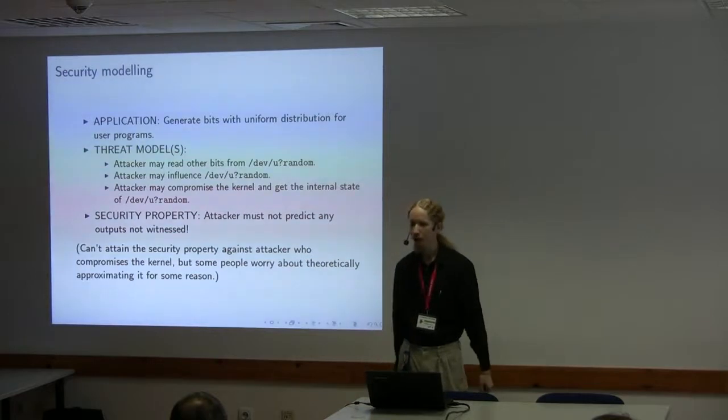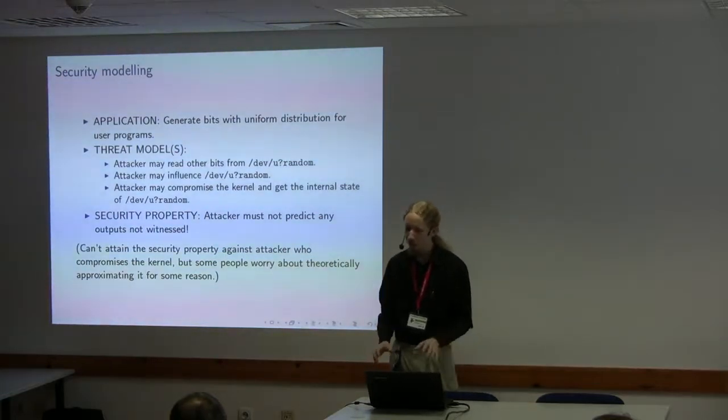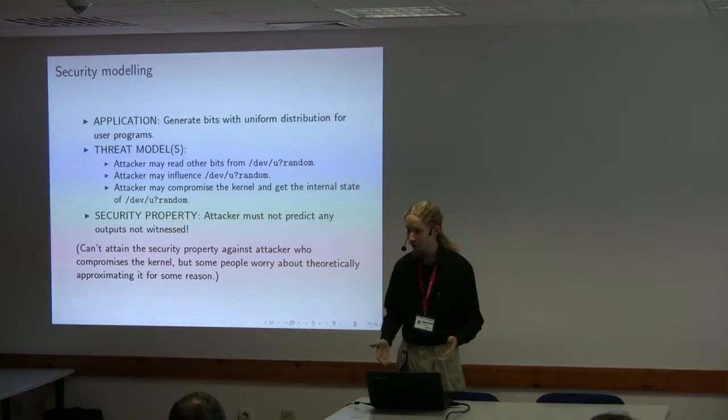These are three different threat models that are relevant in discussion of /dev/random and /dev/urandom. Anytime you're worried about security properties you need to consider the threat models that the properties are relative to. We want to make sure that whatever the attacker is, they shouldn't be able to predict any output from /dev/random or /dev/urandom that they haven't seen before. If they get the total internal state they can predict future outputs, but they shouldn't be able to predict any past ones. They shouldn't be able to figure out what PGP key you generated last week.